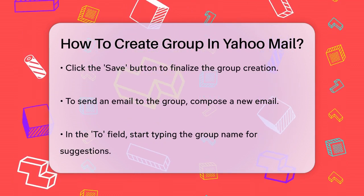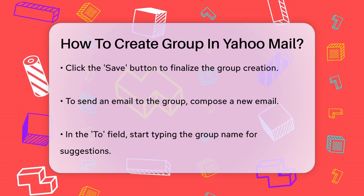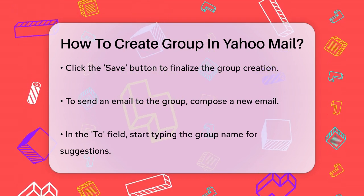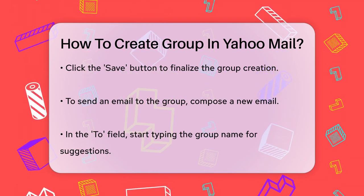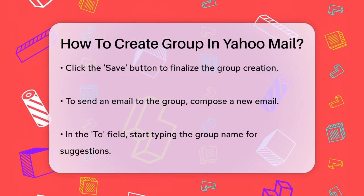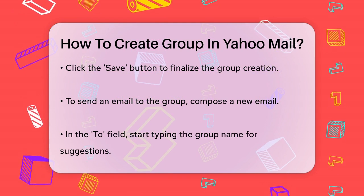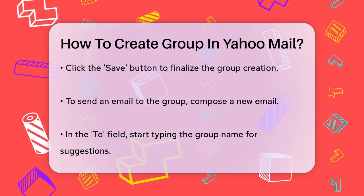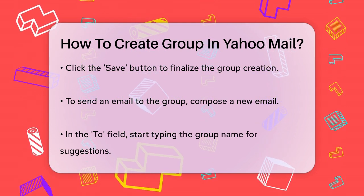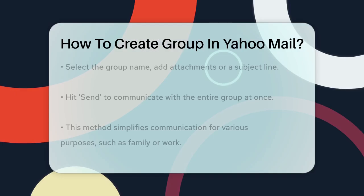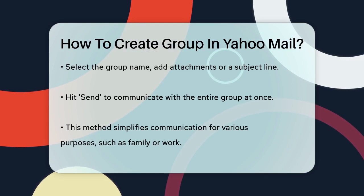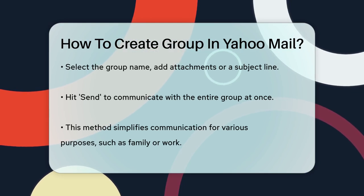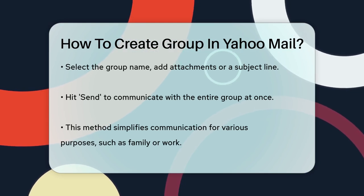To send an email to this group, simply compose a new email as you normally would. In the To field, start typing the name of your group, and it should appear in the list of suggestions. Select the group name, add any attachments or a subject line, and hit Send.